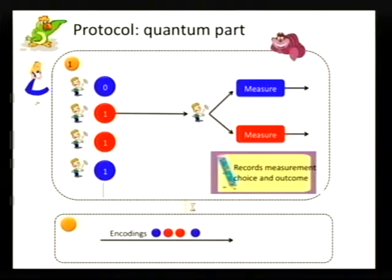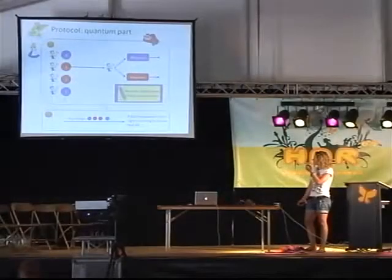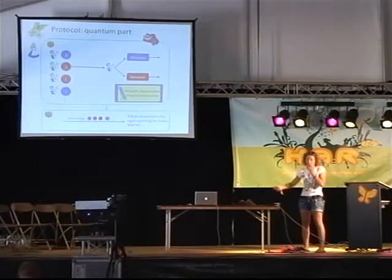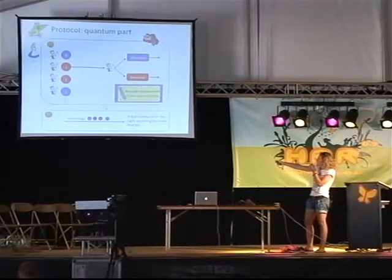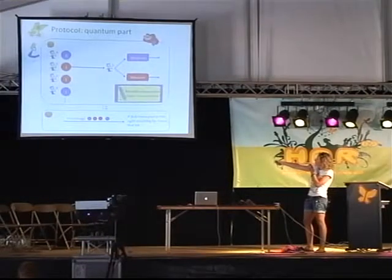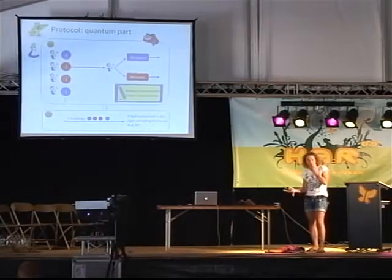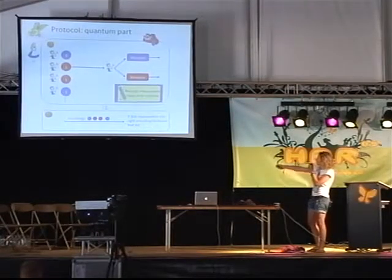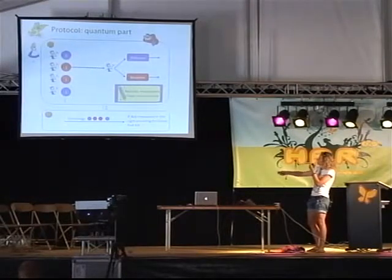There will be a waiting time of maybe two milliseconds, and after this Alice will tell Bob which encodings she chose — for example, blue, red, red, blue and so on. Now, as we noticed before, if Bob measures in the same color as Alice had chosen in her encoding, then he'll retrieve the bit perfectly.